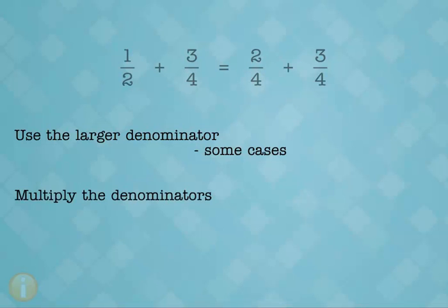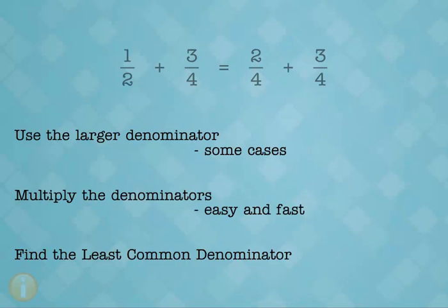The first is simply to multiply the denominators. The second is to find the least common multiple of the denominators and use that as the common denominator. The question is, which of these last two should you use? Multiplying the denominators is easy and fast, but it means you might end up with a fraction that needs to be reduced.